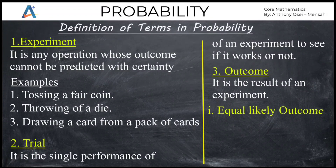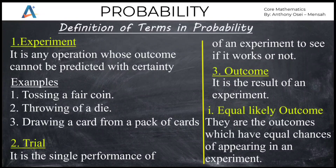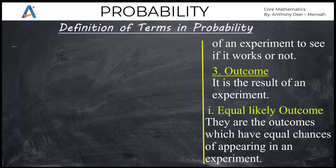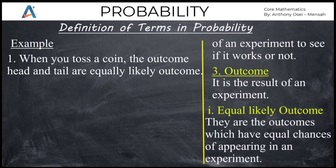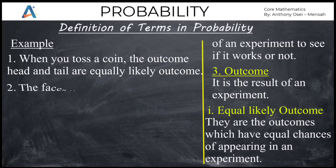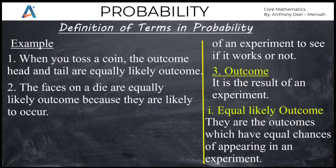With outcomes, we have two different types. The first is equally likely outcomes. In an experiment, outcomes which have equal chances of occurring are called equally likely outcomes. For example, if we toss a coin, head and tail are equally likely outcomes — either head or tail can occur. Similarly, if you throw a die, the faces one, two, three, four, five, and six are all equally likely outcomes, since any face can show.